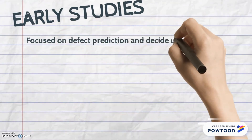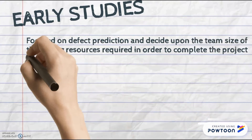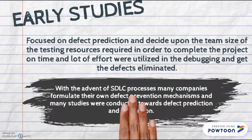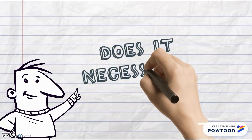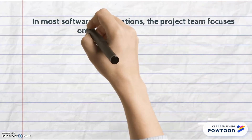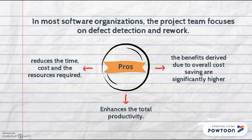The earliest studies focused on defect prevention and deciding upon the team's size of testing resources required in order to complete the project on time. Hence, a lot of effort is utilized in debugging and eliminating defects. With the advent of the SDLC process, many companies formulate their own defect prevention mechanisms and many studies have been conducted toward defect prediction and prevention. In most software organizations, the project team focuses on defect detection and rework. It is therefore advisable to make measures that prevent defects from being introduced in the product right from the early stages of the project.